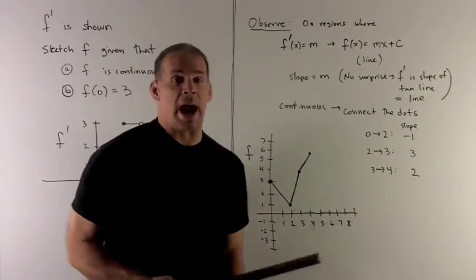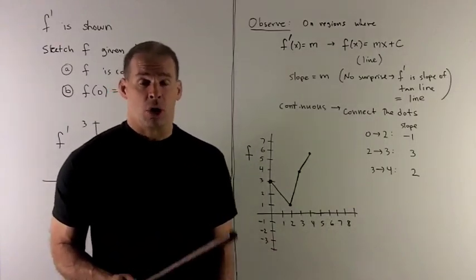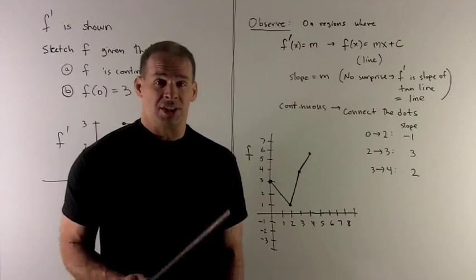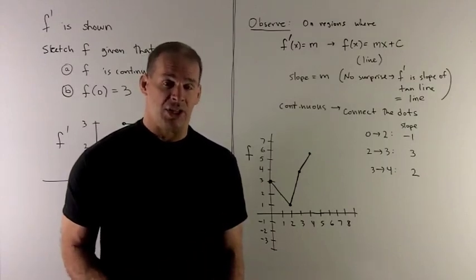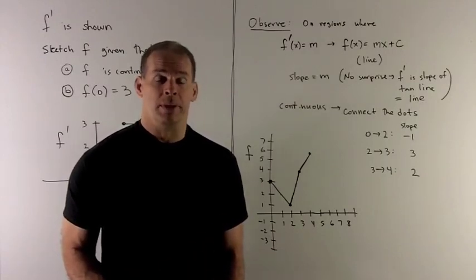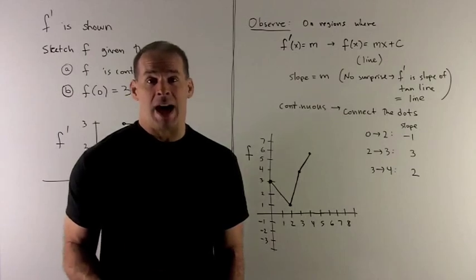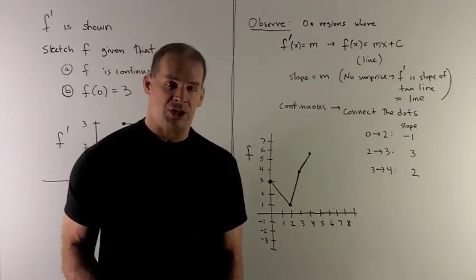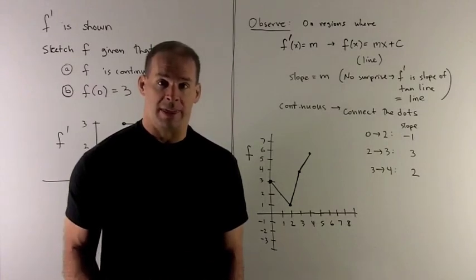Okay, this is no surprise because recall f prime, the first derivative, just gives us the slope of the tangent line to f at our point. If I'm talking about an actual line, the tangent line is the line itself. So the slope of the tangent line is equal to the slope of the actual line.